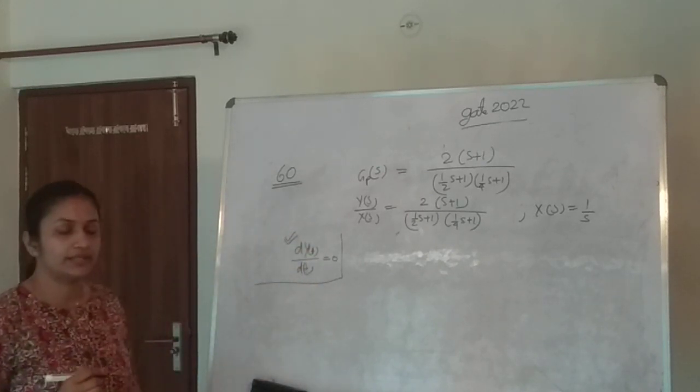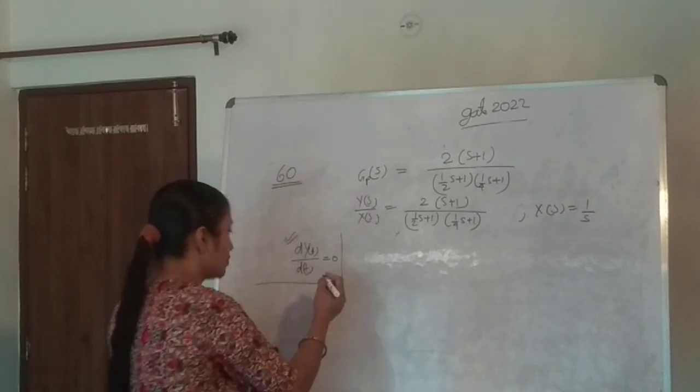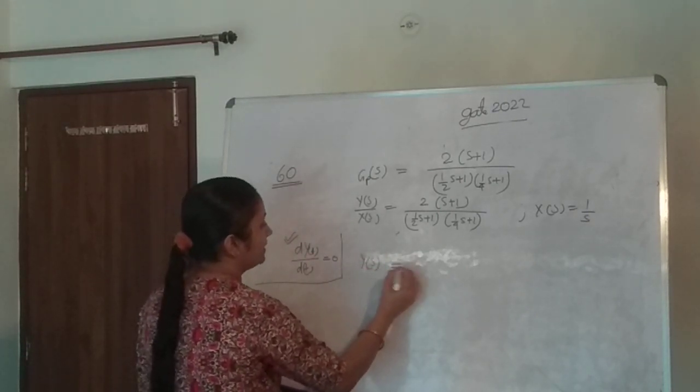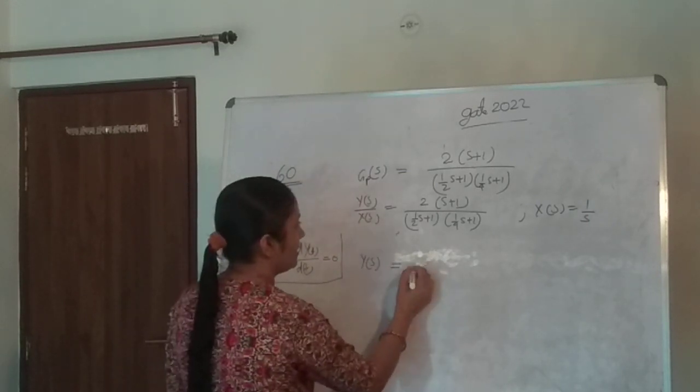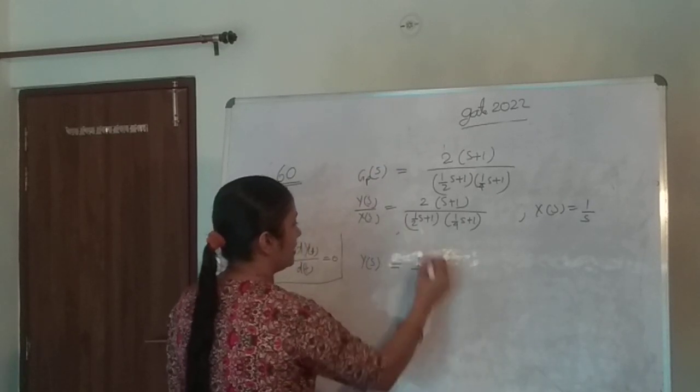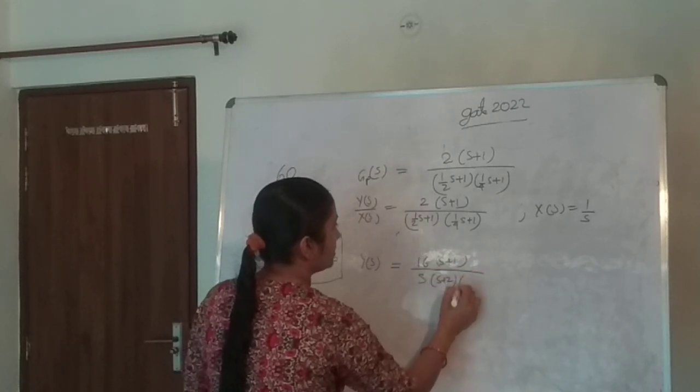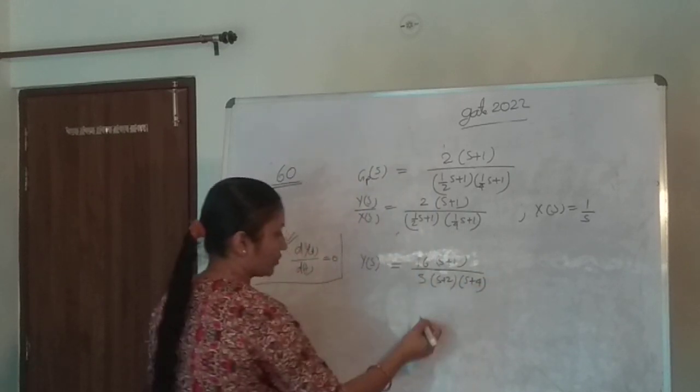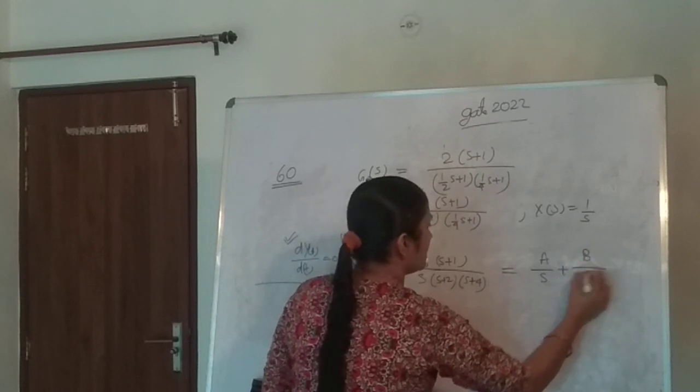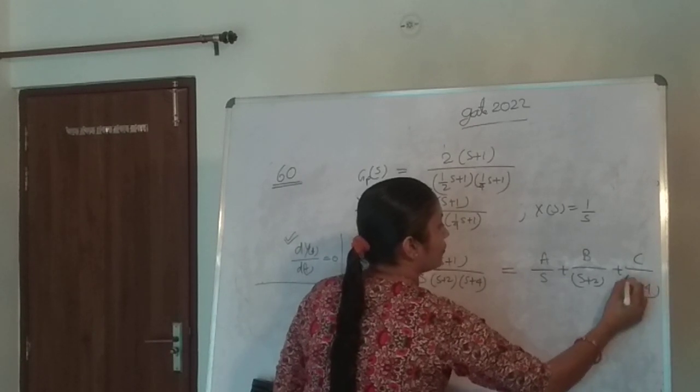How can we convert the s-domain equation into the time domain? By taking the inverse Laplace transform. So for taking the inverse Laplace transform, first take the partial fraction of this equation. This will become 1/s times 16/(s+1) divided by (s+2)(s+4). For partial fraction, you can take it as A/s plus B/(s+2) plus C/(s+4).